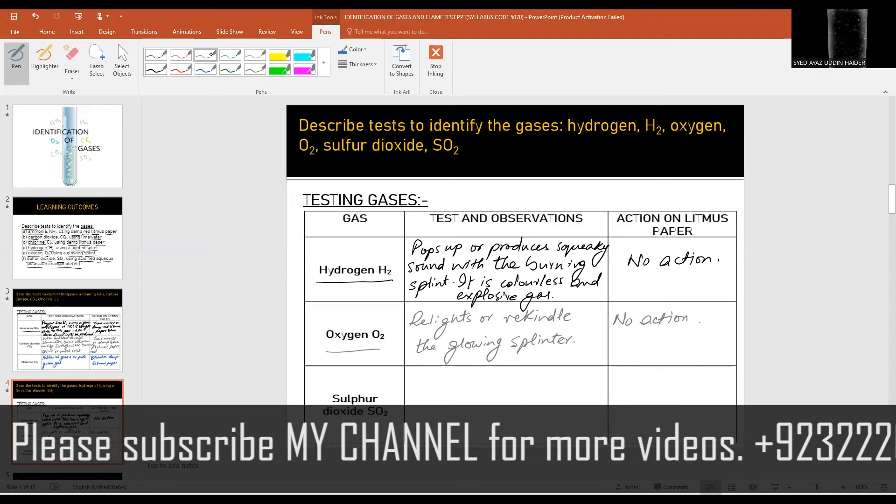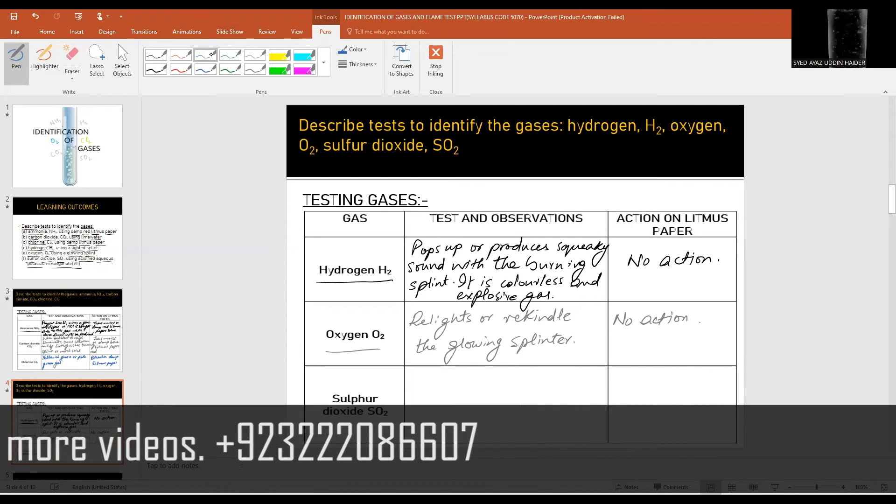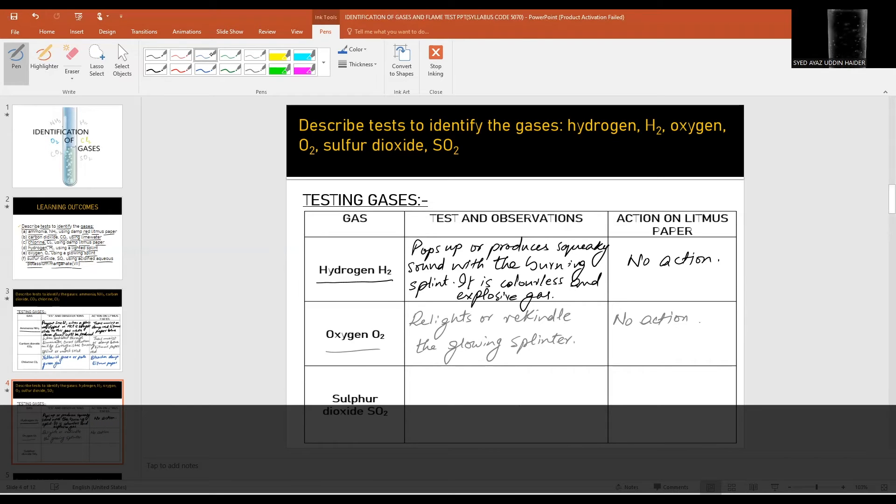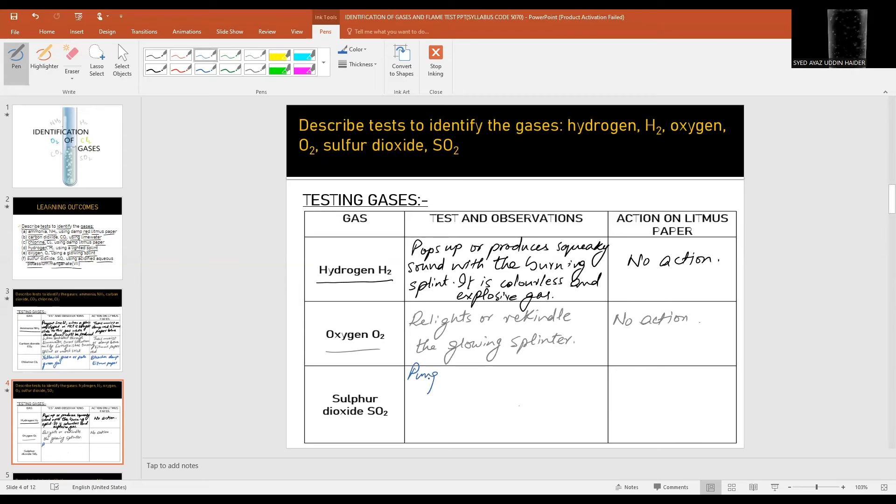Last one is sulfur dioxide, which also has a pungent smell. It turns acidified aqueous potassium manganate(VII) from purple to colorless.